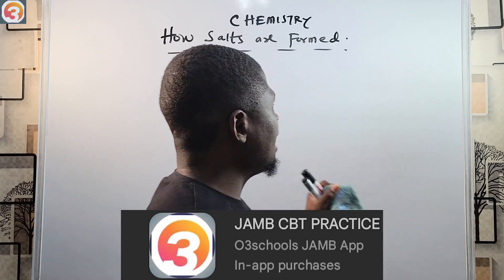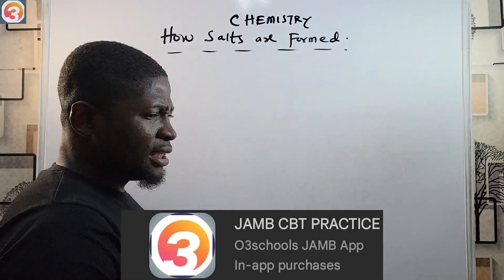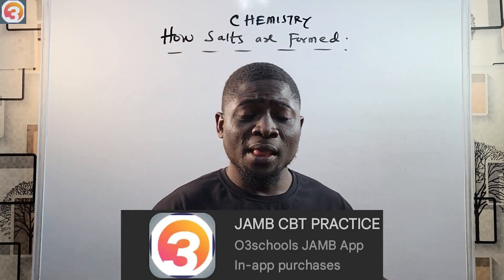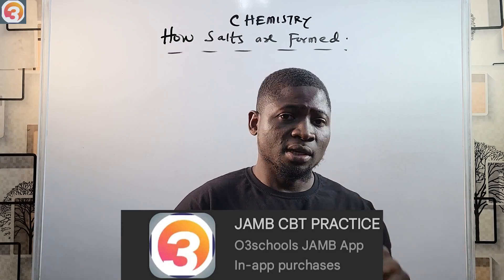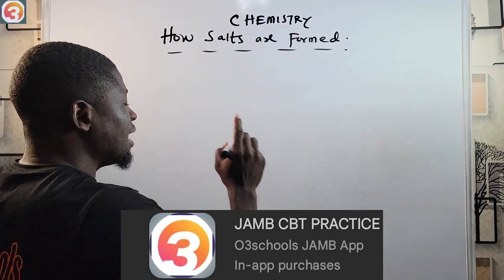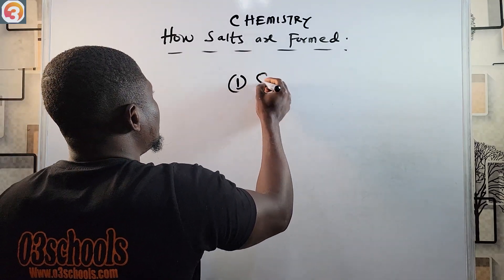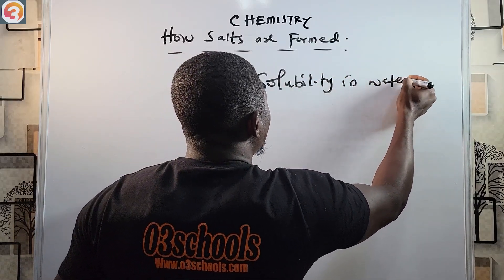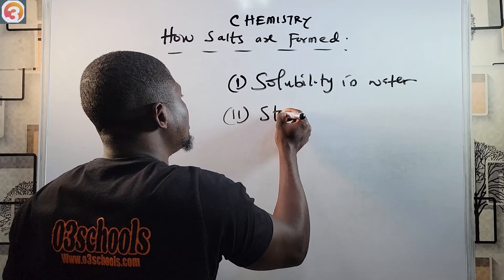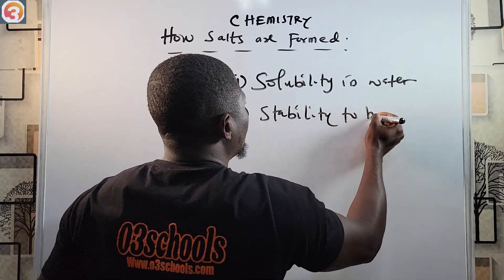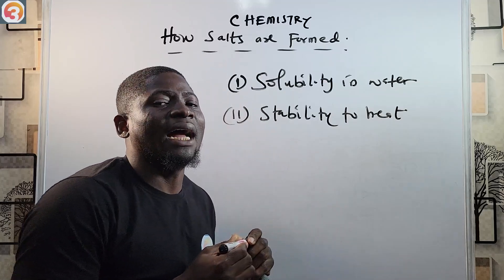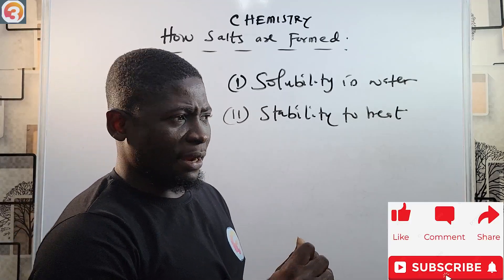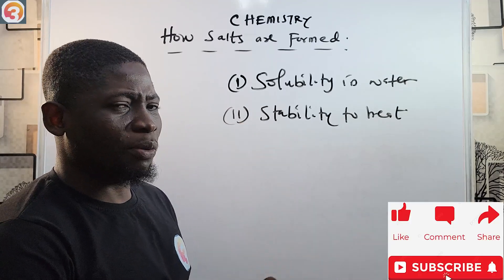Now let's see how salts are formed. The method by which a salt is prepared will depend on two things: one is its solubility in water, and the second one is its stability to heat. How soluble is the salt in water? How stable is the salt to heat? These are the two major factors on which the preparation method will depend.